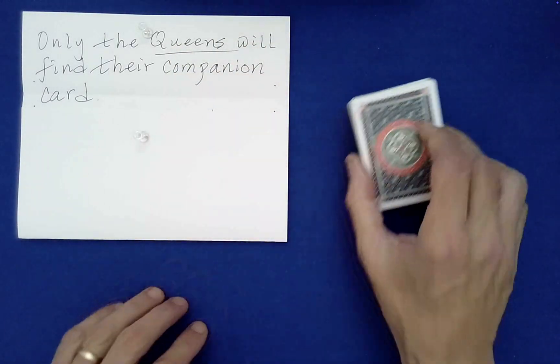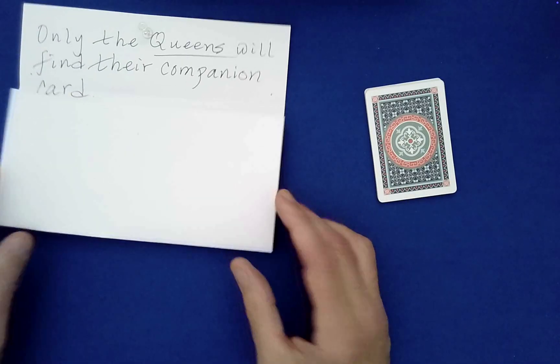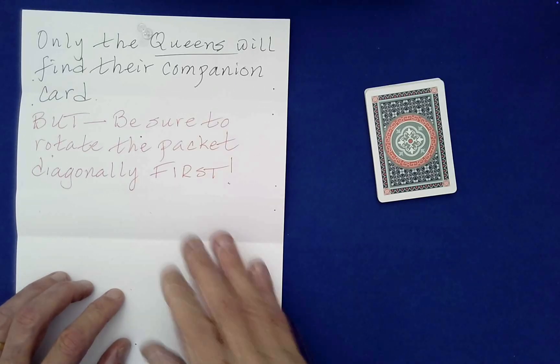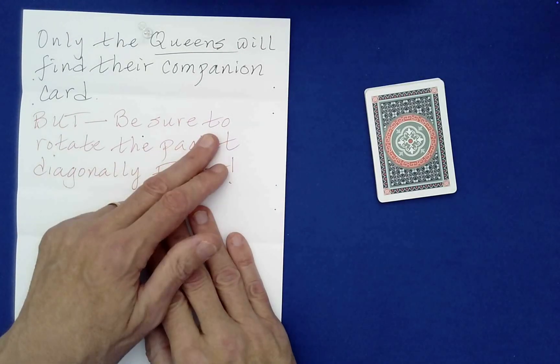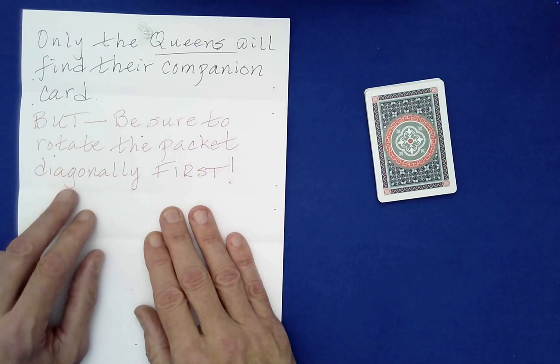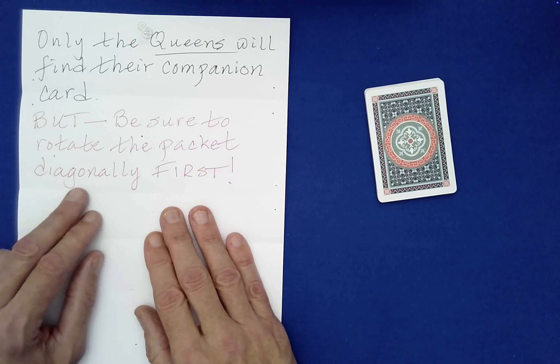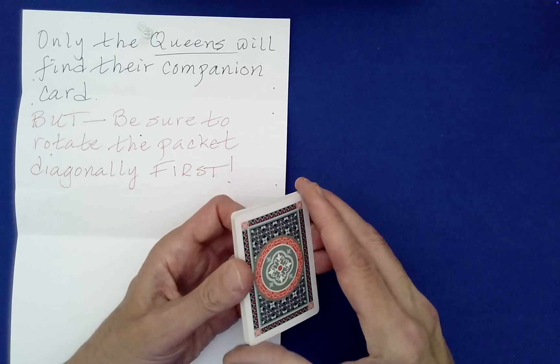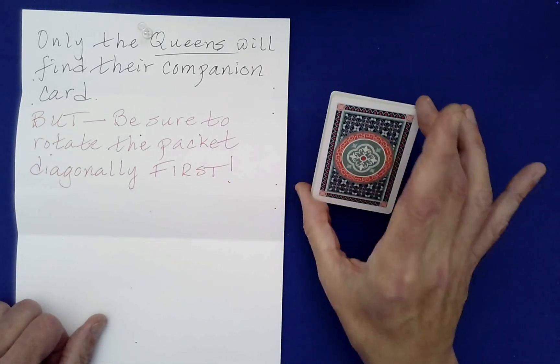And here are the jacks, they failed as well. We didn't find a single one. Boy, I really thought the queens were going to do well with this. Oh wait, wait, wait, wait, there is a second part to the prediction. But be sure to rotate the packet diagonally first.